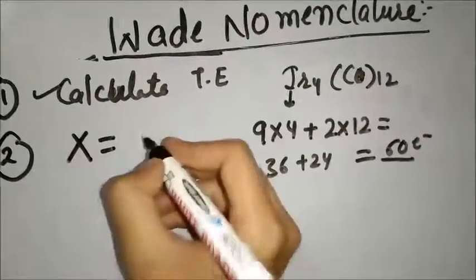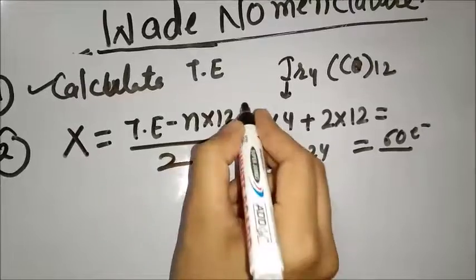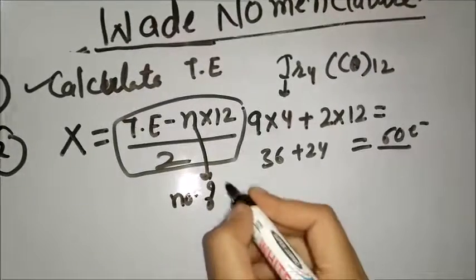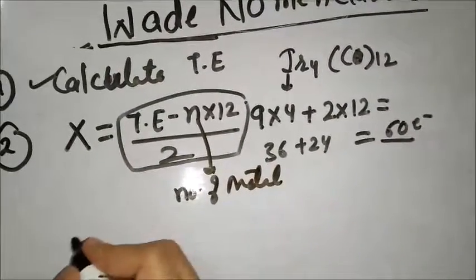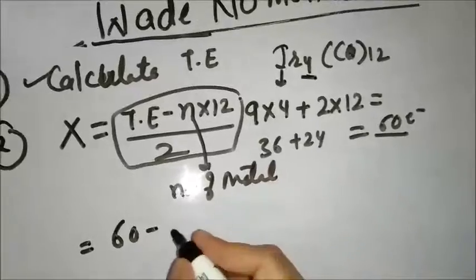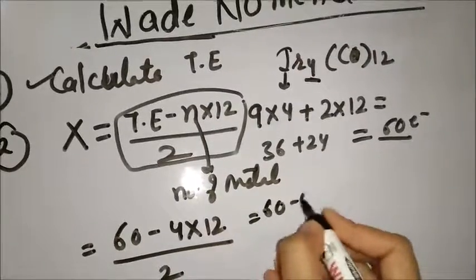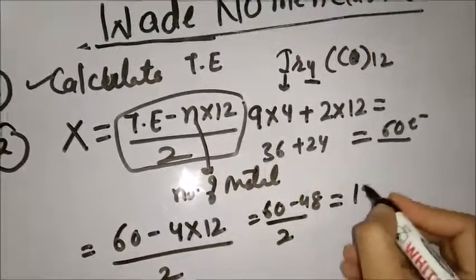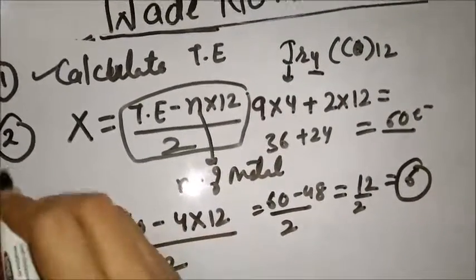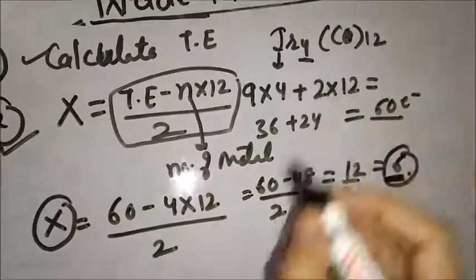Next step is to calculate x. What is x? The formula is: x = (total electrons − n × 12) / 2, where n is the number of metals. For this structure, total number of electrons are 60, minus n which is 4, so 4 × 12 = 48, divide by 2. That is (60 − 48) / 2 = 12 / 2 = 6. So x comes out to be 6. Our second step is completed: calculate x.